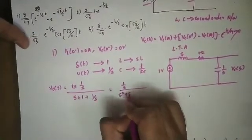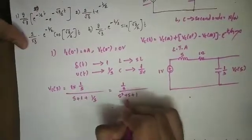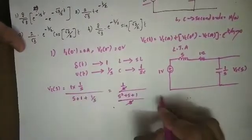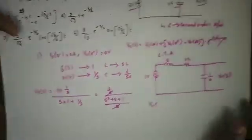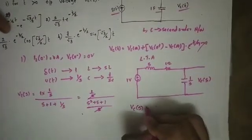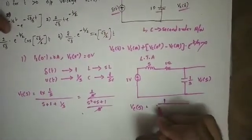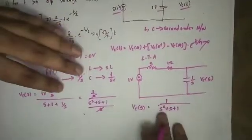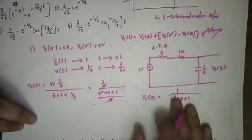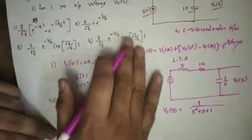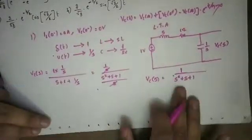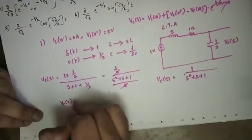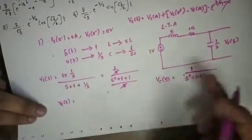This simplifies so that Vc(s) = 1 / (s² + s + 1). Now we have the Laplace transform, and we can identify the answer from the options. There is a sine and cosine formula we can apply using the Laplace transform table.